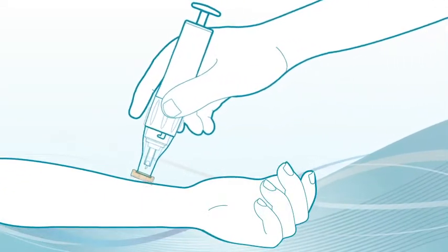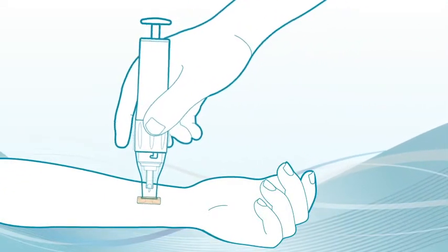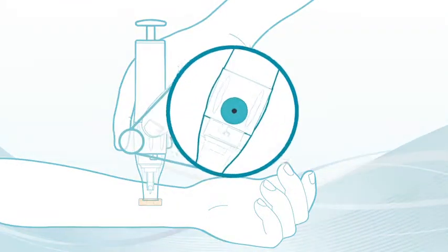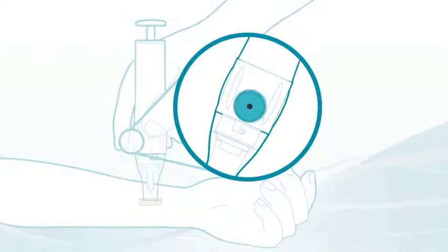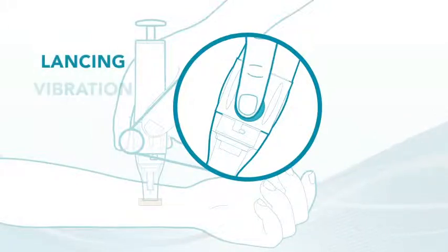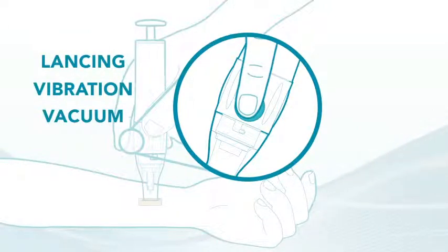Hold Gentile as if it were a fountain pen and you were going to write with it. The activation button is another of Gentile's unique features. Once the contact tip nozzle assembly is against your skin, pushing the activation button automatically starts the lancing, vibration, and vacuum simultaneously.